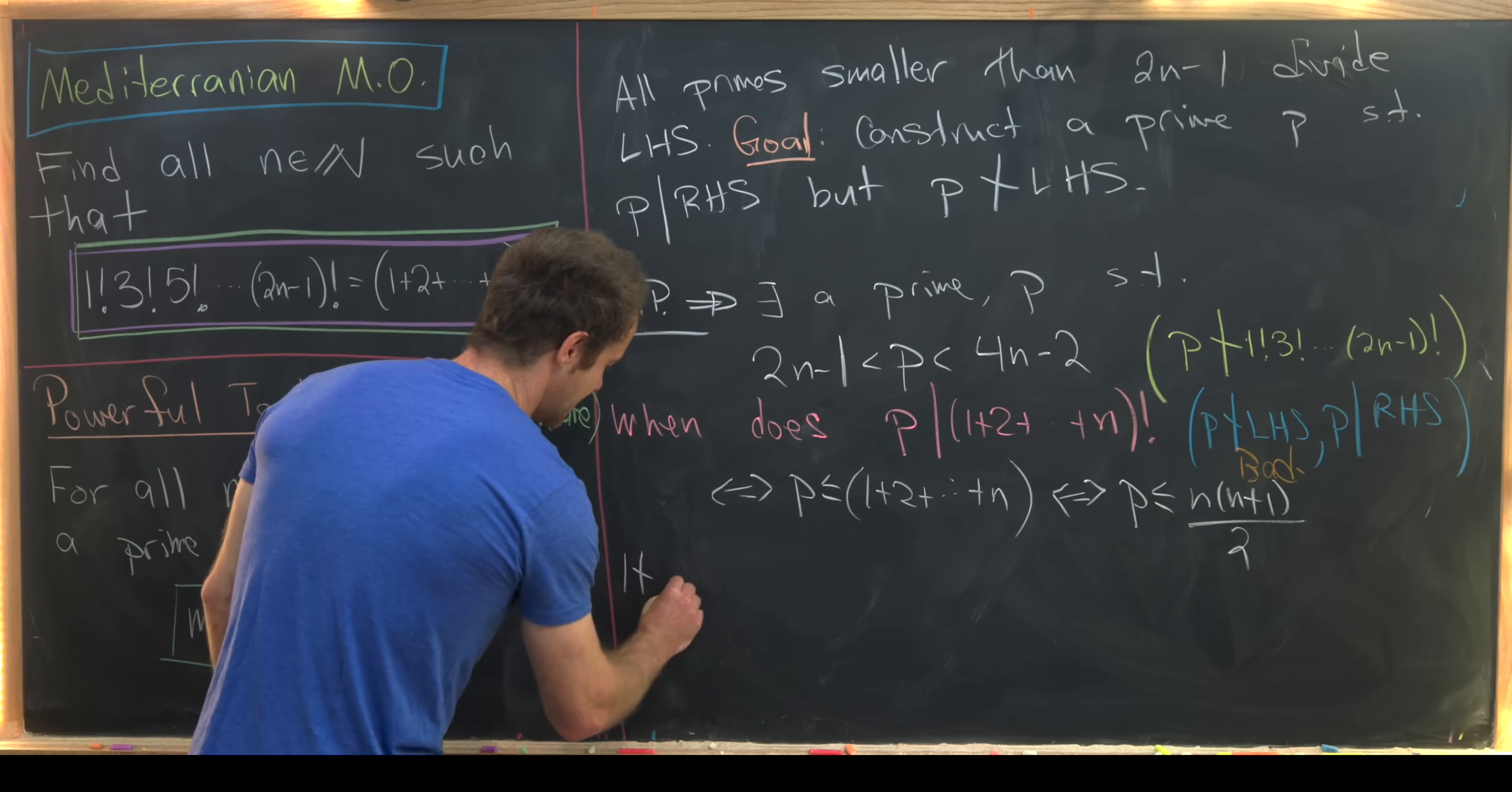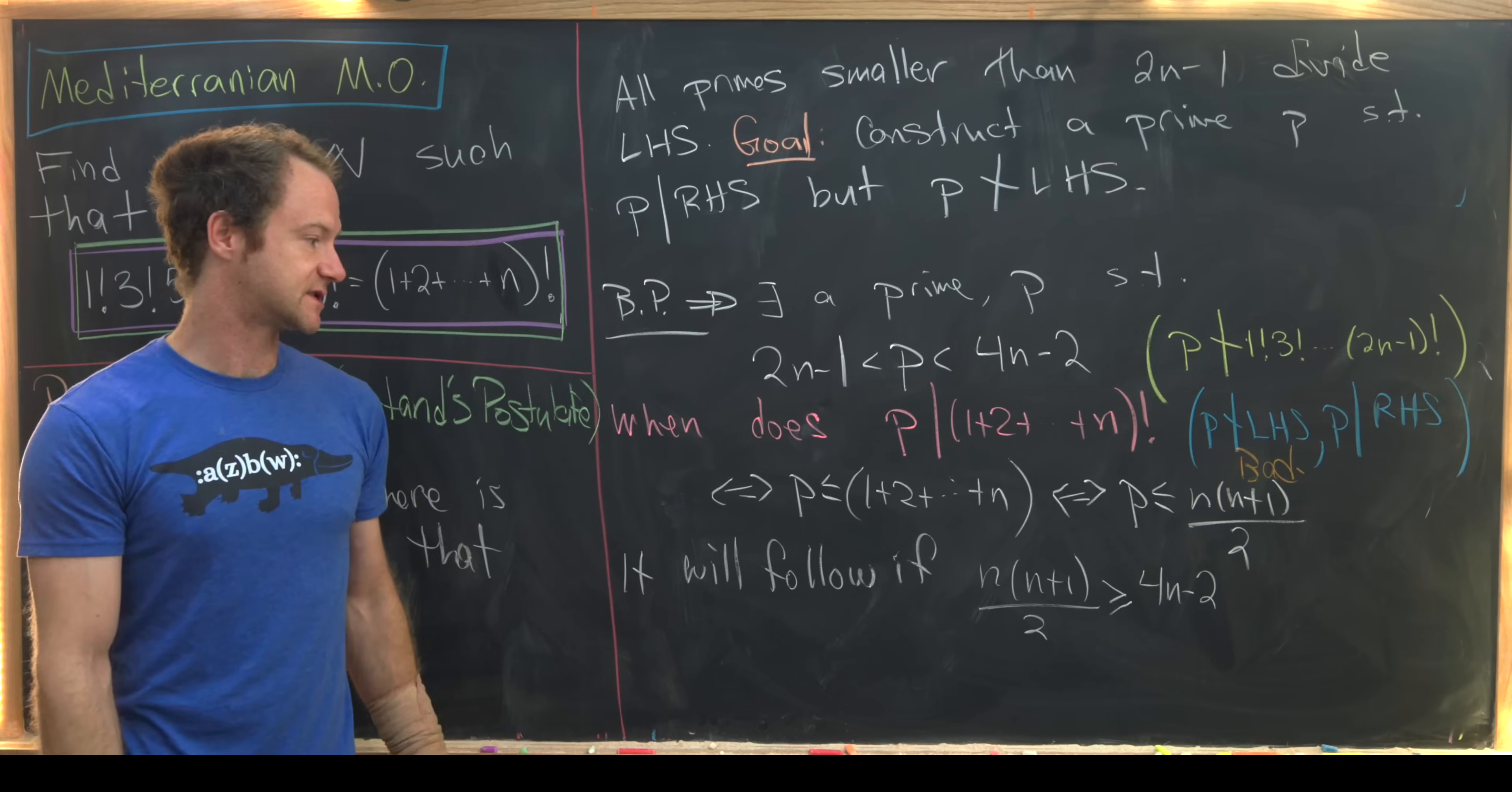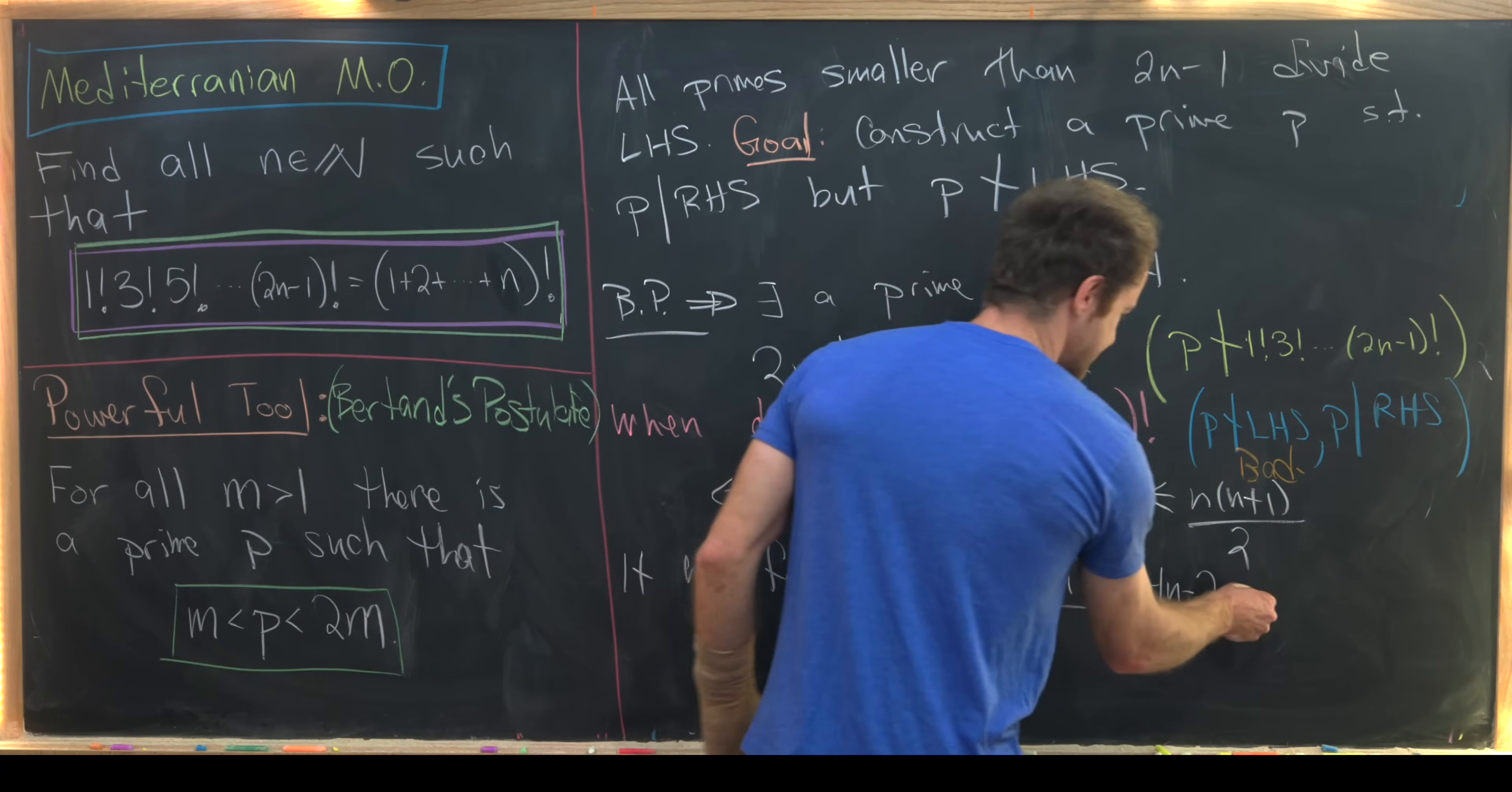So let's write that as: it will follow if n times n plus 1 over 2 is bigger than 4n minus 2, really bigger than or equal to 4n minus 2. Again, because if we can fit this n times n plus 1 over 2 above the 4n minus 2, then our p is most definitely smaller than our triangular number. Notice this is just some inequality involving a quadratic expression, so it would be pretty easy to solve this for the values of n.